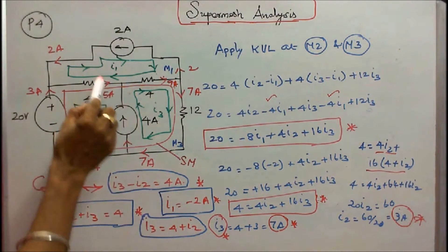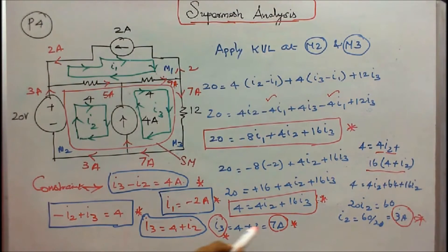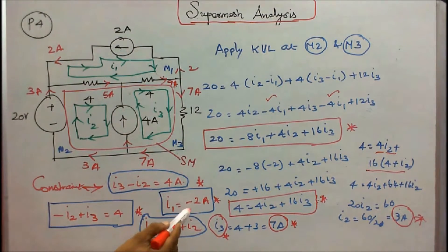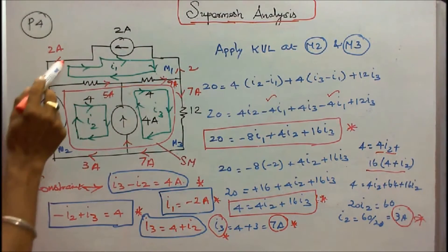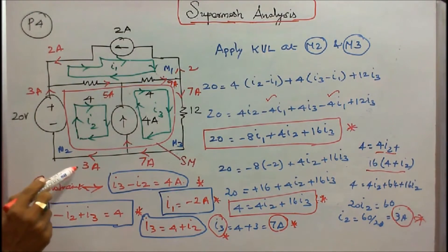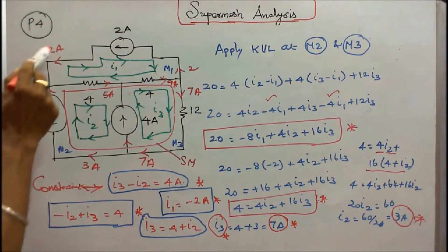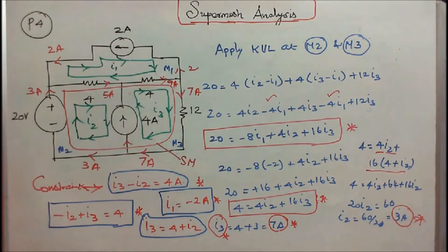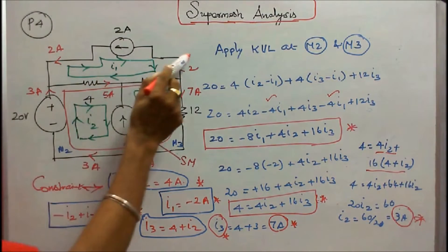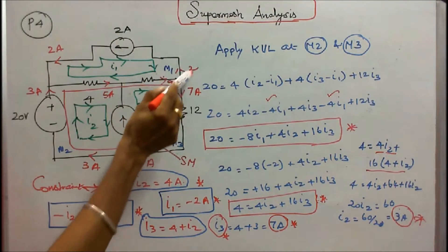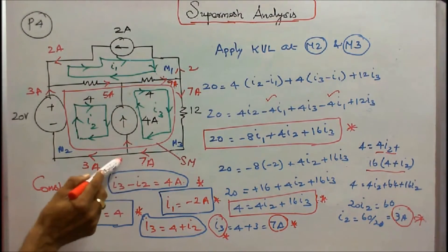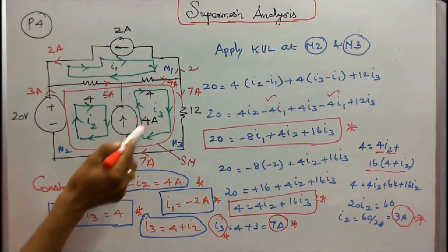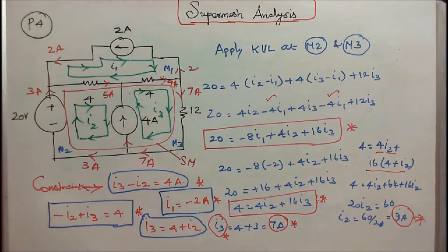Once I know I2, I find I3: I3 equals 4 plus I2 equals 4 plus 3 equals 7 amps. So I1 equals minus 2, I2 equals 3, I3 equals 7. Verifying Kirchhoff's current law: I1 is minus 2, so current towards the node is 2 amps. I2 is 3, so 3 plus 2 equals 5 amps in the 4 ohm resistor. Then 5 plus 4 equals 9 amps in the next 4 ohm resistor. I3 is 7; current towards the junction is 9, leaving is 7 plus 2 equals 9. At another junction, 7 minus 4 equals 3. Kirchhoff's current law is verified.